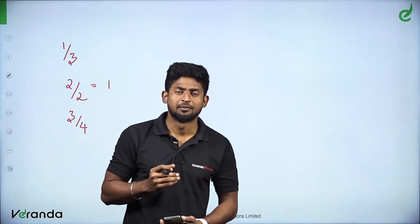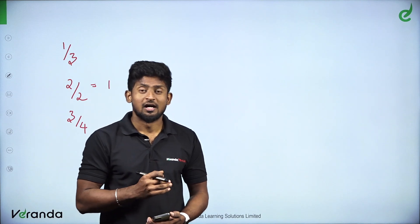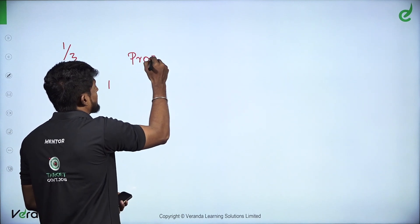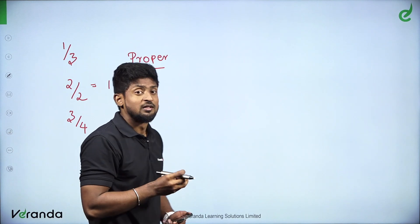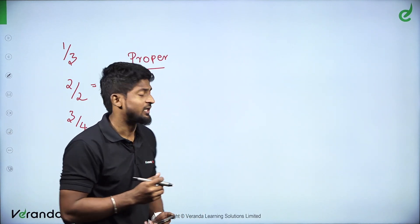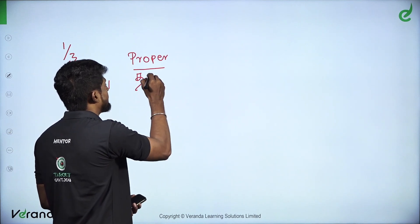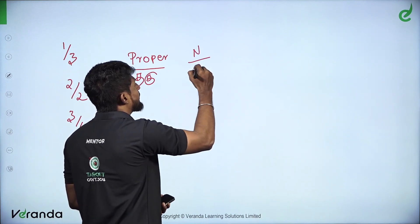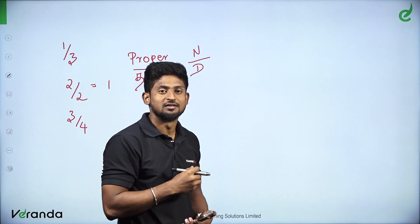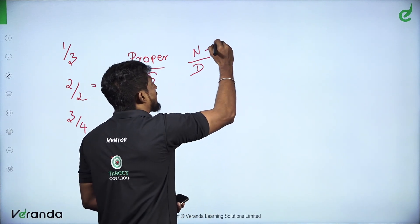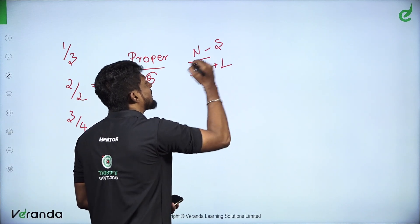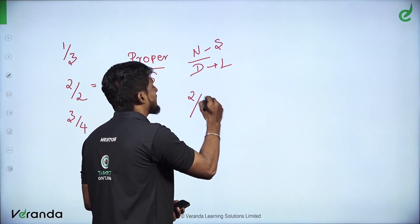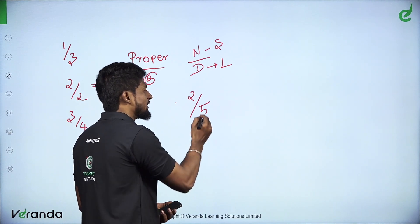What is a fraction? There are three types. In pinnangals there are three types. The first type is the proper fraction. What is the proper fraction? Look at the numerator divided by denominator. The numerator is a small number and the denominator is a large number — that is a proper fraction. Example: two by five. This is a proper fraction.